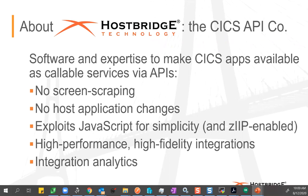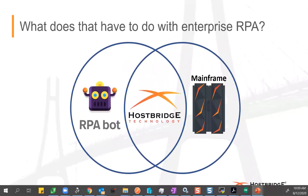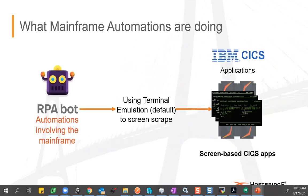Let's get on to RPA and ask: what does any of that have to do with enterprise RPA? We're going to start with this diagram — a seemingly harmless bot on the left. For this presentation, imagine it's a Blue Prism bot. Over here we have a mainframe, and the question is how is that bot going to interact with the mainframe? We've positioned HostBridge in the diagram because we think we offer a far more efficient way. But let me show you how it happens out of the box with Blue Prism, UiPath, or Automation Anywhere.